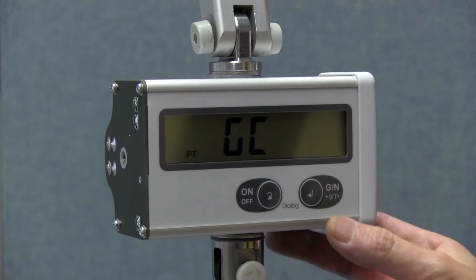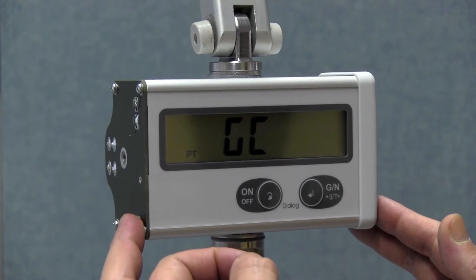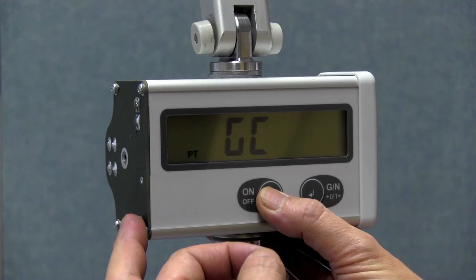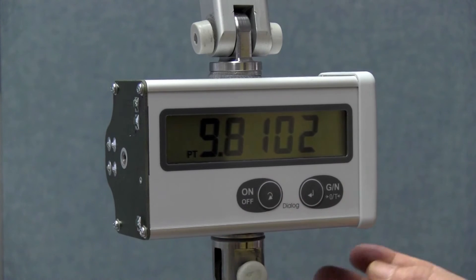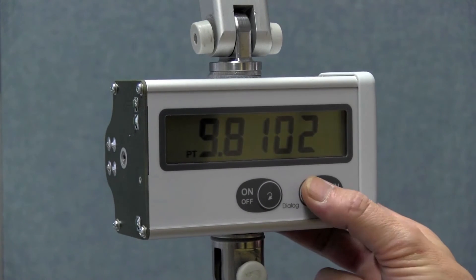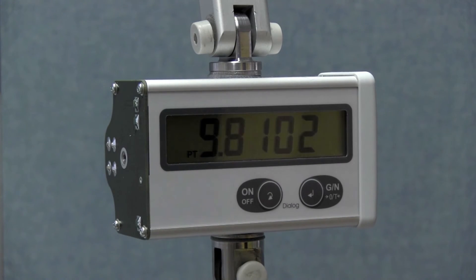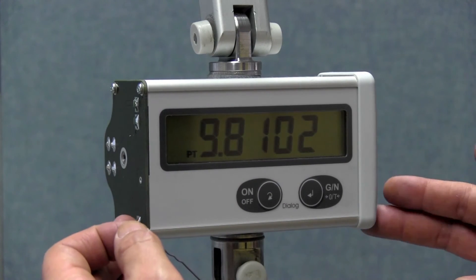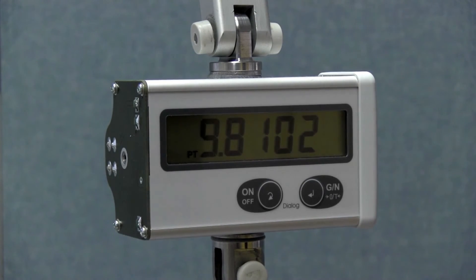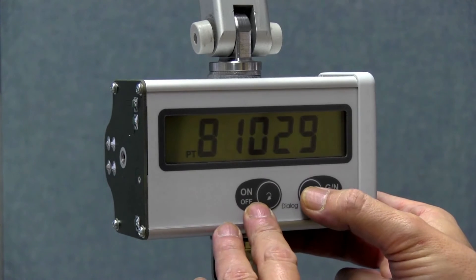The gravitational acceleration factor, GC, which acts on the scale during calibration with weights, can be displayed or changed. Currently the display shows 9.81029, which is the G factor in Darmstadt, Germany. I can either confirm or overwrite this factor. To confirm it, I have to press the on-off key again so that the leading 9.0 disappears. Then I confirm the value.